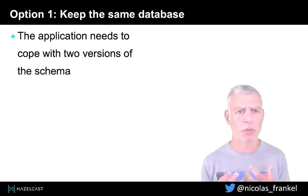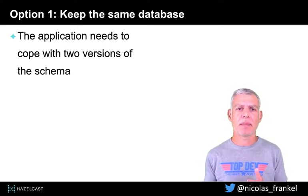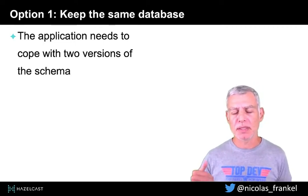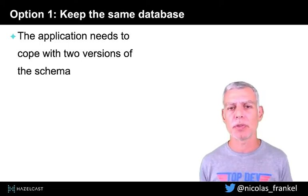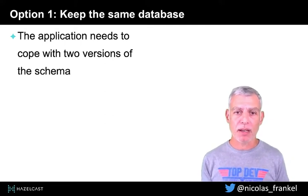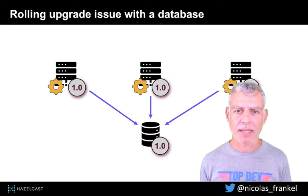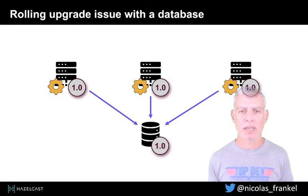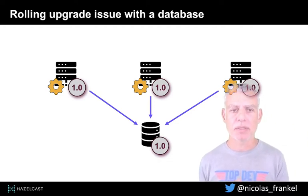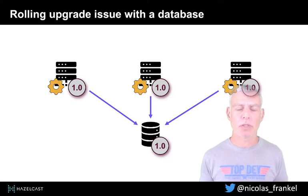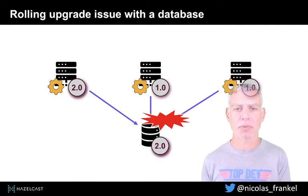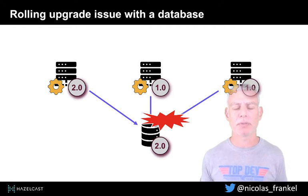Let's discuss option one: we keep the same database. The problem in that case is that at some point you will probably need to do a change to the database schema, which means your application needs to cope with two different versions of the schema. With Kubernetes rolling upgrades, we have application pods and also database pods that need to be upgraded. If we roll out version two of the database schema, the old pods won't work anymore — and that's an issue.